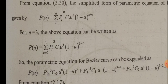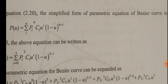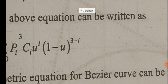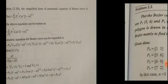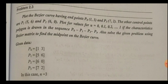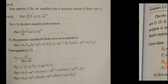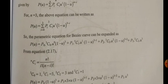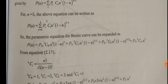Summation of i equal to 0 to 3, P_i times 3-C-i times u^i. This gives us the equation: P(u) = P0 times 3C0 times (1 minus u)^3.